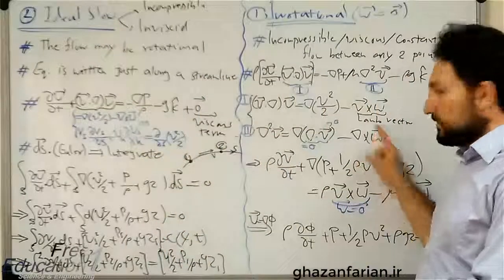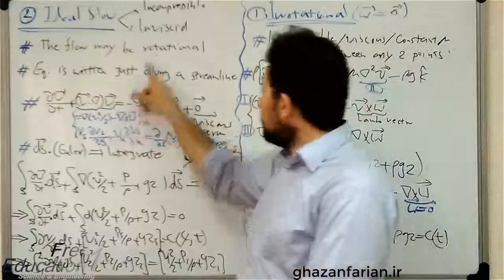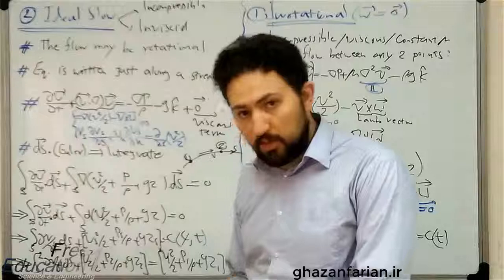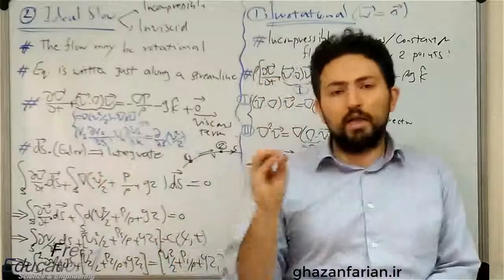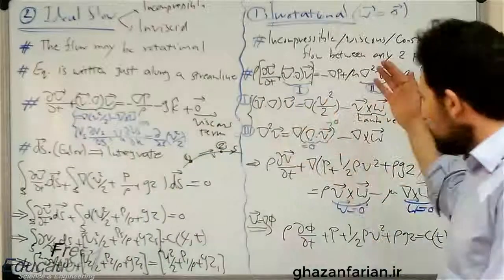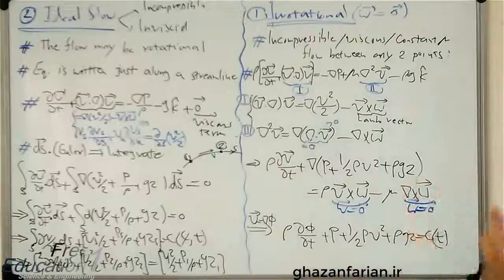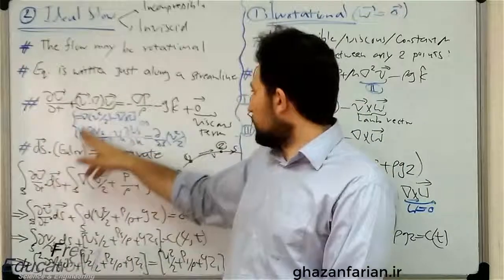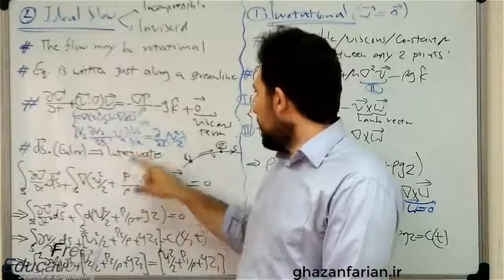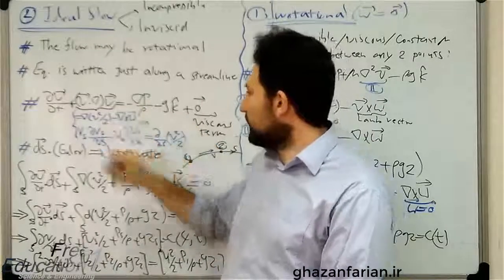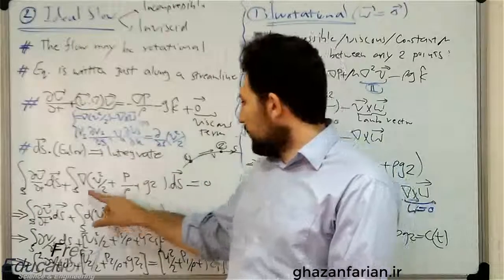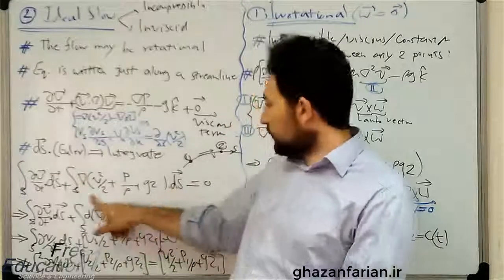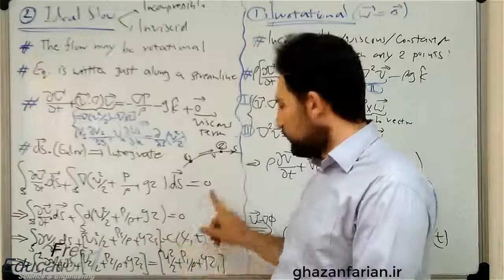In the previous section, the lambda vector was zero because the flow was irrotational. But here, the flow is rotational — the vorticity vector is not zero. However, the dot product of the dS vector and the vorticity vector is zero, so the equation is valid along a specific streamline. We have the gradient of pressure, the gradient of the z coordinate, and the gradient of velocity, which can be combined into one term. So the integration along the streamline of the gradient of these three terms dot dS equals zero.